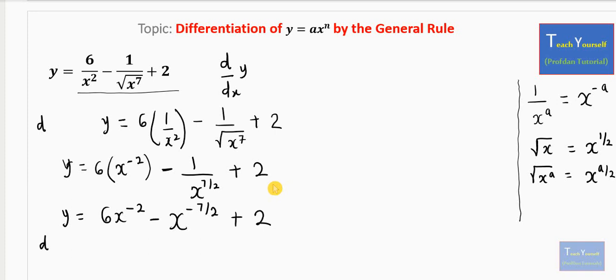What we are looking for is to differentiate y with respect to x. Applying the general rule to the first term, we have 6 is a constant, the power is minus 2 which is a constant. Drop the power, then you have x raised to power minus 2 subtract 1. Minus, the constant here is 1. Drop the power which is minus 7 over 2. Then we write x raised to power minus 7 over 2 subtract 1. Plus 2 is a constant.